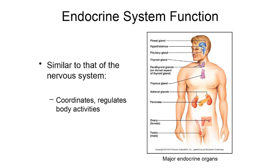So the nervous system is really, really rapid with its effects. However, once a neurotransmitter has been released and once it's had its effect, it's either broken down or it goes through reuptake. Either way, it's taken out of the synapse, and once it's out of the synapse it's no longer able to have its effects on the cell it was targeting. So the effects of the nervous system are really, really quick, but they are also short-lived.